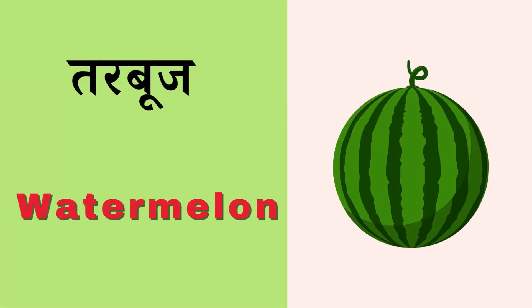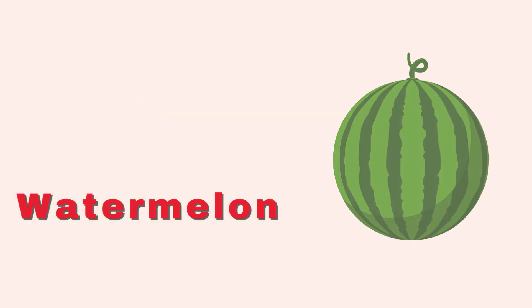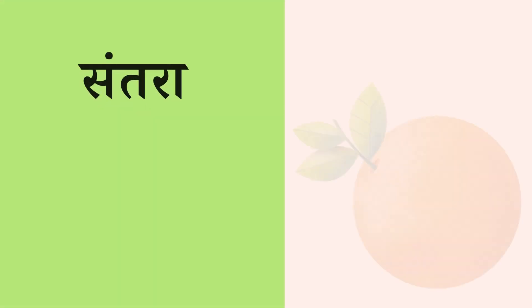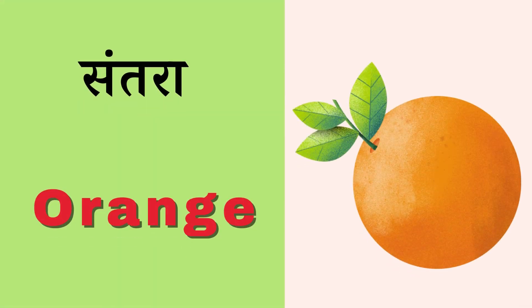Talbuj means Watermelon, W-A-T-E-R-N-E-L-O-N, Watermelon. Santara means Orange, O-R-A-N-G-E, Orange.